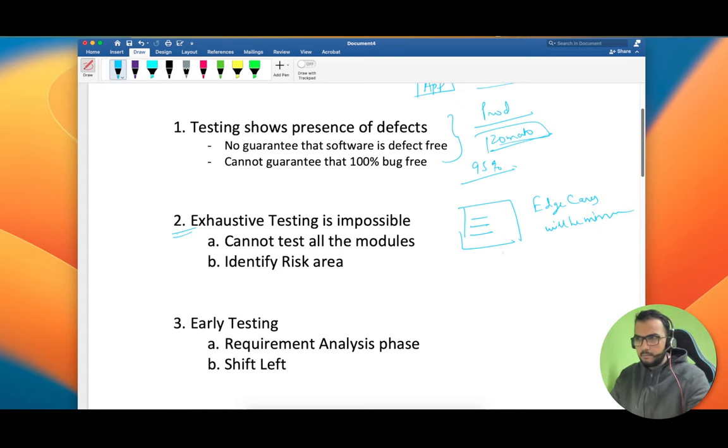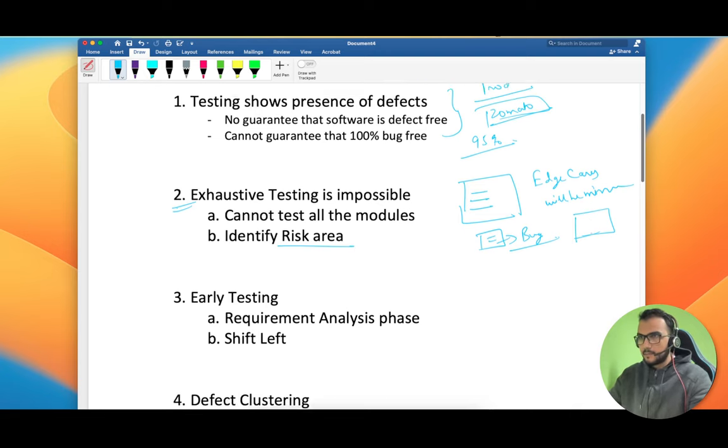As an end user, I'm using the application in production and I'm going to pick up this bug. You cannot do anything about it. The only thing which you can do is identify the risk area. Possibly in your previous two builds you are seeing that at the checkout page we are finding too many bugs, so you can focus on the checkout area more.